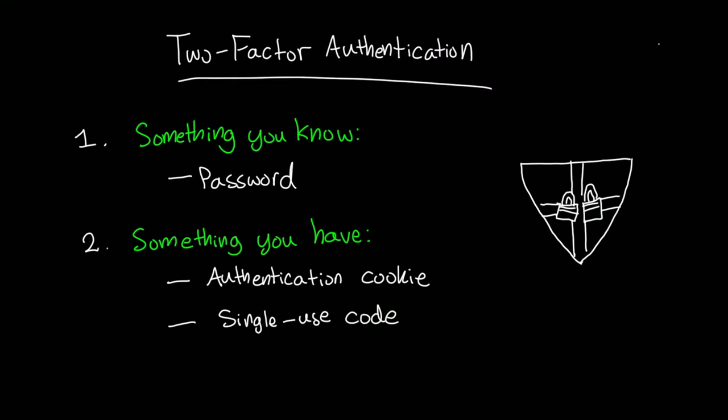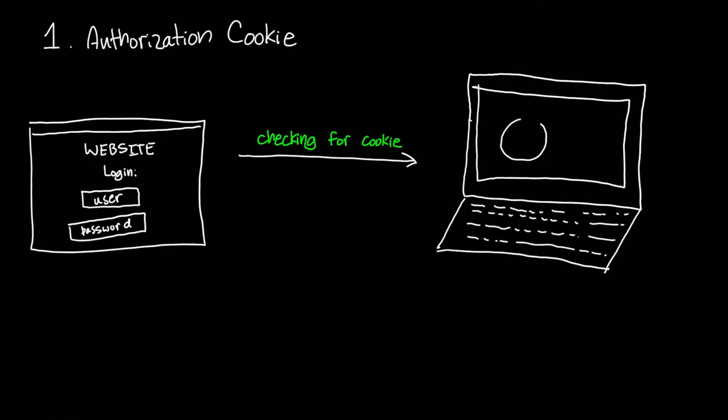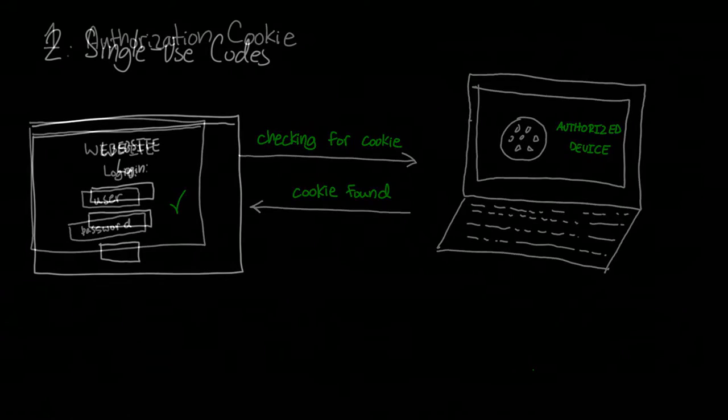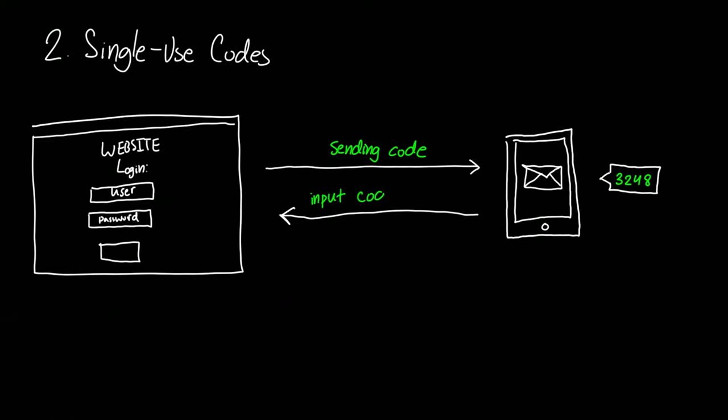The most common way two-factor authentication is implemented is directly through the website you are using. A website might ask to embed a cookie onto the specific device you want to authorize, and only that device will be a valid login location. Or, a website might send you a text message with a one-time access code when you try to log on. However, these methods require that the website stores your phone number as well as your password.